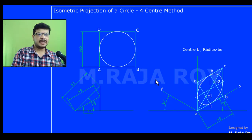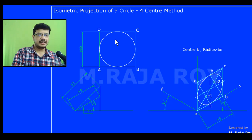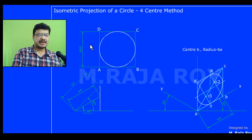In this video tutorial I'll explain how to draw the isometric projection of a circle using the four-center method. Here, assume that the given diameter of the circle is 60.